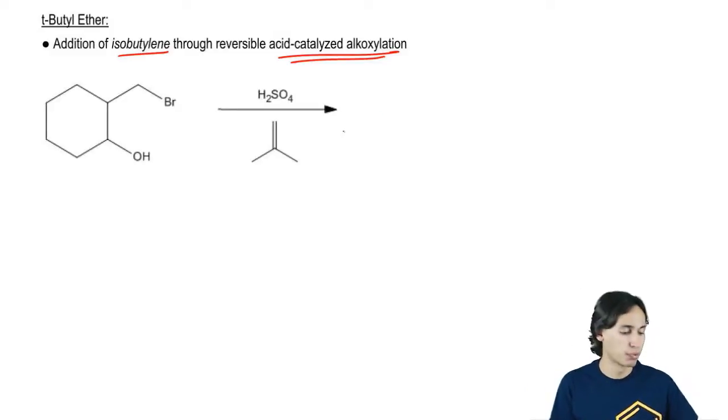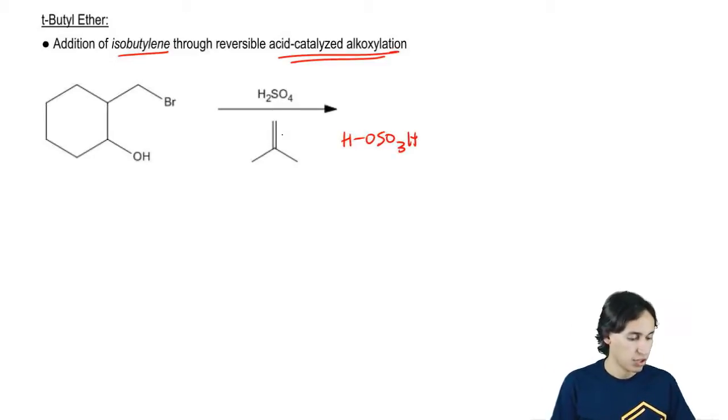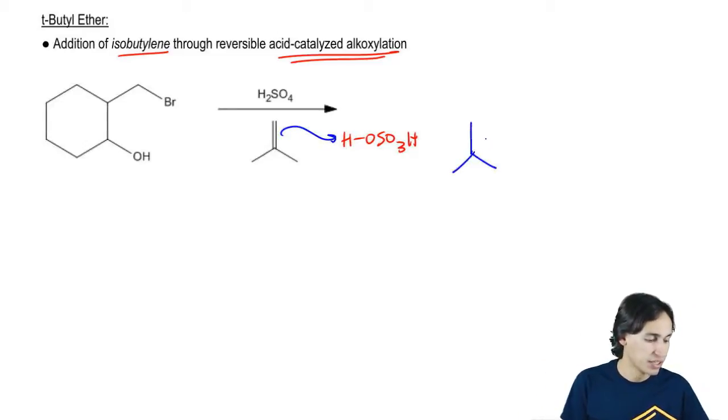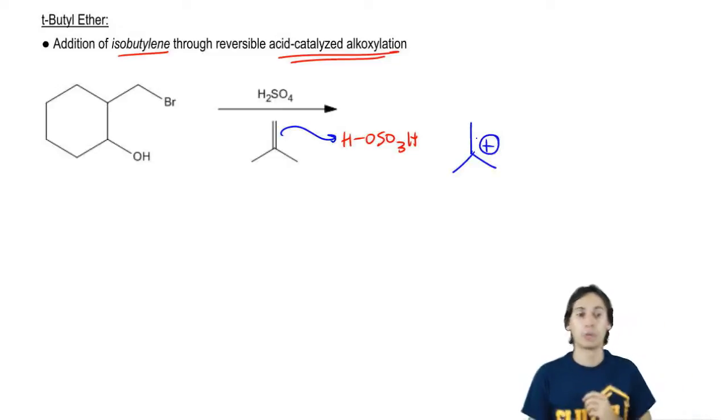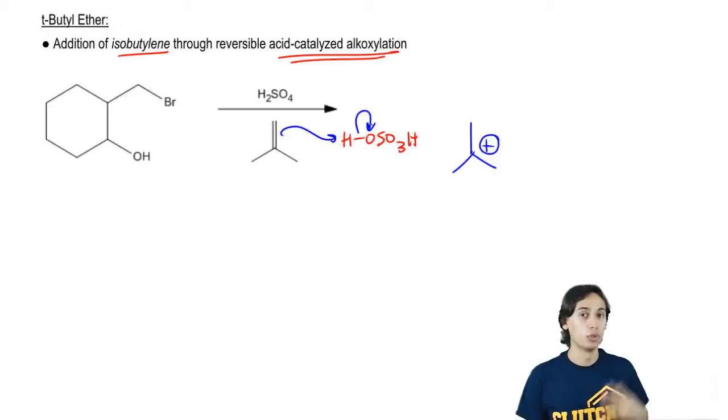In our first step, we're going to protonate our double bond through a normal addition mechanism. What this is going to give me is a Markovnikov carbocation. Remember that Markovnikov states that your carbocation goes in the more stable position. After I've done that, given the electrons to the O, what happens next?